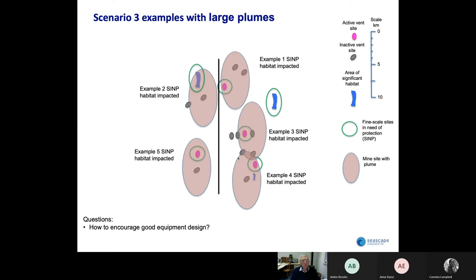I mentioned the problem of plumes, but there are probably good engineering designs to limit the spread of plumes. But if plumes could not be limited, they may be much larger than my previous slides suggest. This shows what the effect would be then — the plume impacts just about everything on this slide, so all the protected areas would be impacted. Good equipment design should therefore lead to a lot more mining being feasible in these types of scenarios.